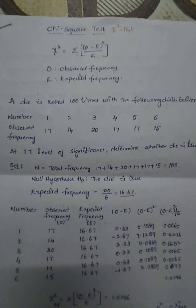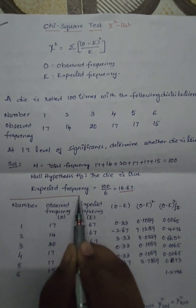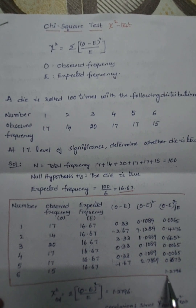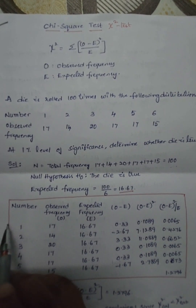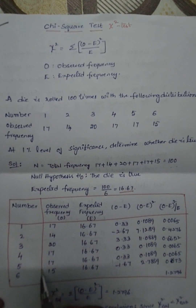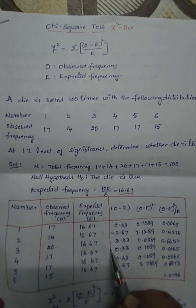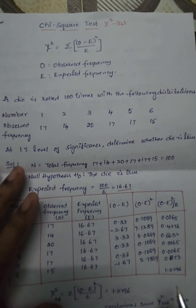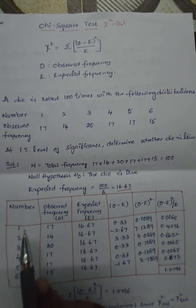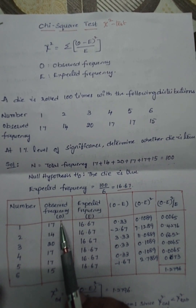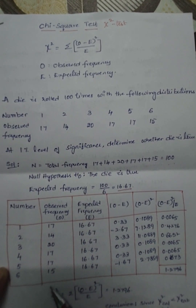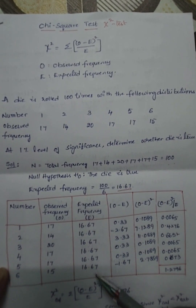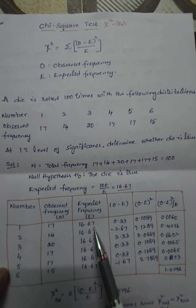Now we will frame this table with the following columns: number, observed frequency (O), expected frequency (E), O minus E, O minus E whole square, and O minus E whole square by E. The numbers are 1 through 6, with their respective observed frequencies from the data. The expected frequency is 16.67 for each throw of the die.